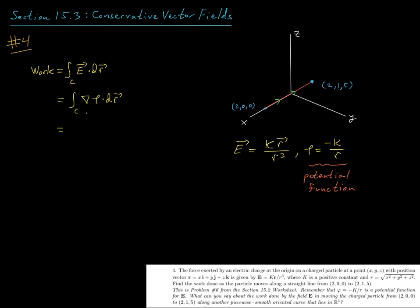All we need to do now is evaluate our potential function phi at the point (2,1,5), our terminal point, and then subtract from that the potential function phi at our initial point (2,0,0).